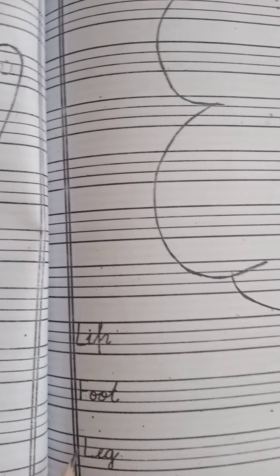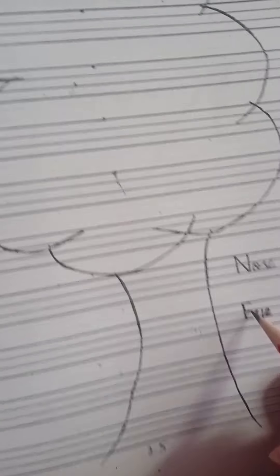Then next is parts of body. Parts of body. Here we can write: lip, foot, leg, nose, eye.